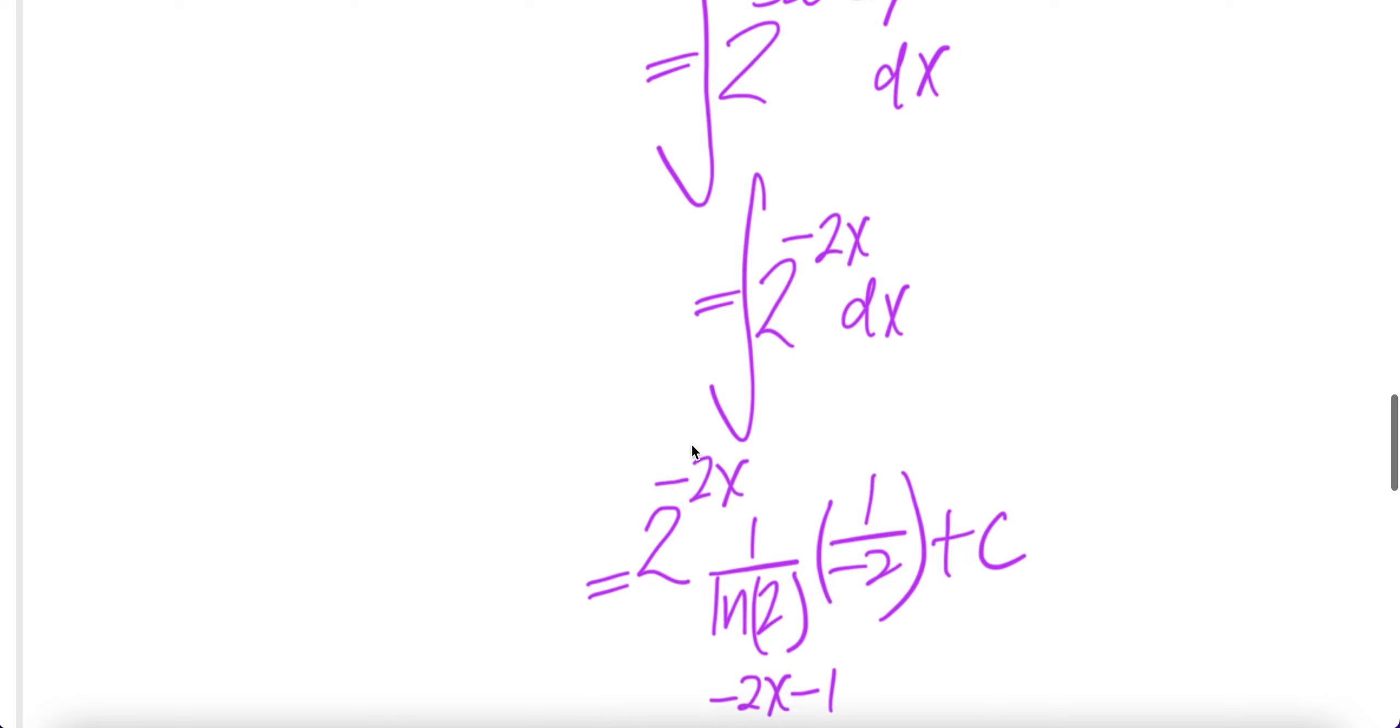The integral of this is, write the same thing, divided by the log of the base times - we need to do a correction because here is 1 and negative 2. They're different, so we correct by dividing by negative 2.